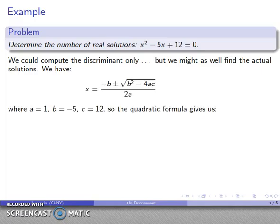So we have our quadratic formula, where again, a is the coefficient of x squared, that's 1, b is the coefficient of x, that's negative 5, c is the constant, that's plus 12. So I can substitute those into the quadratic formula.